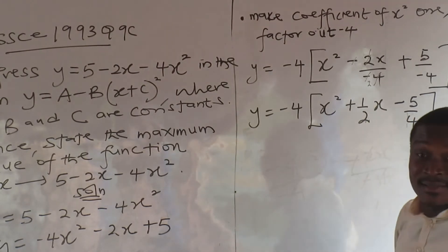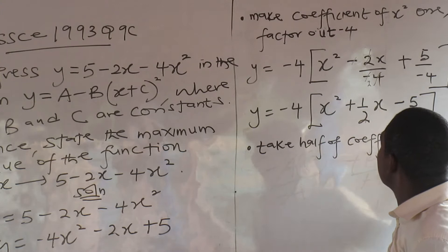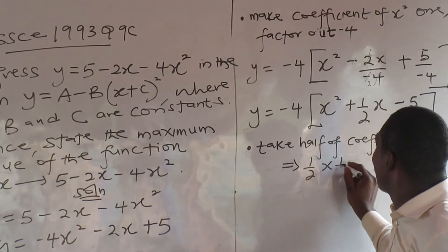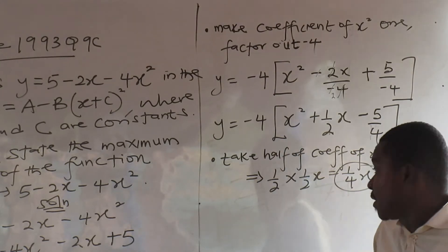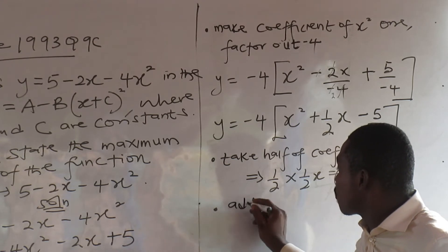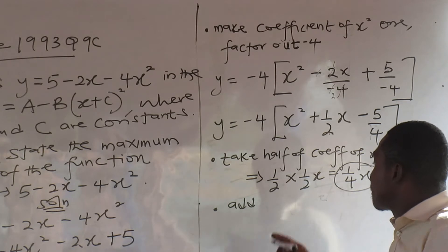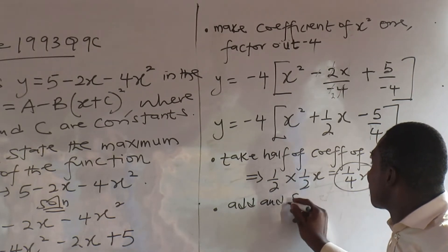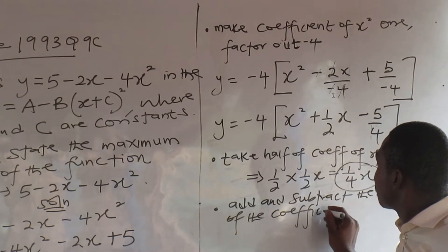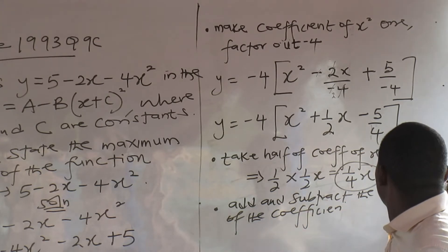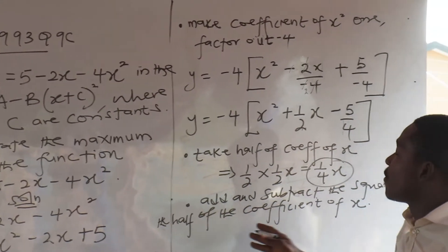The next step: take half of the coefficient of x. Taking the half simply means multiplying that coefficient by one half. So how do you take the half? Just multiply that coefficient by half, and that gives you your half. Once you have that, add the square and subtract the square.